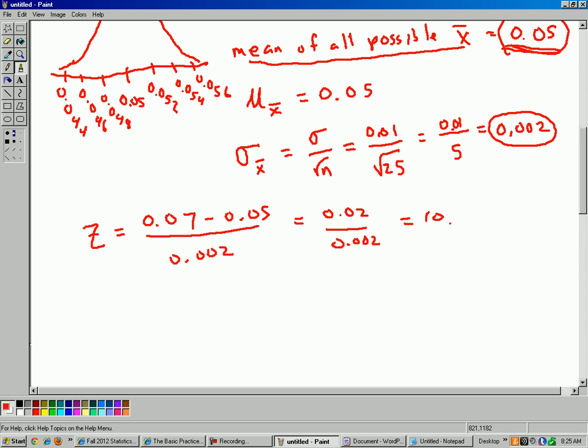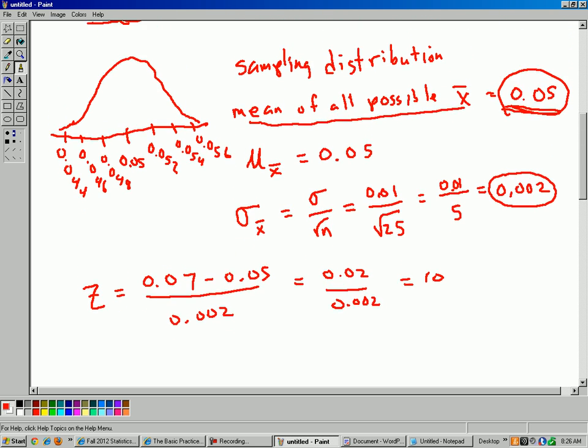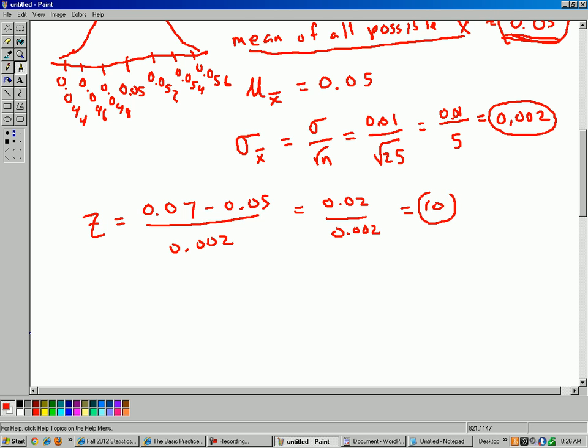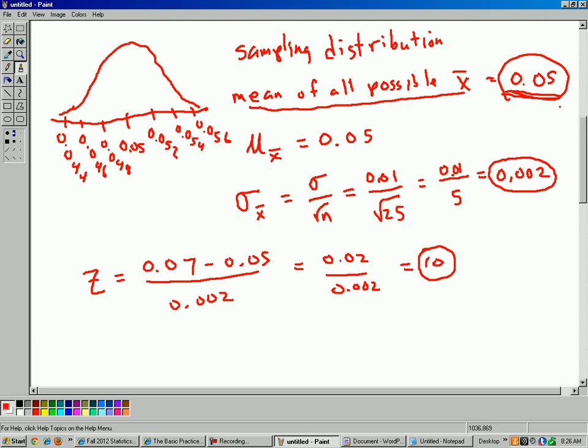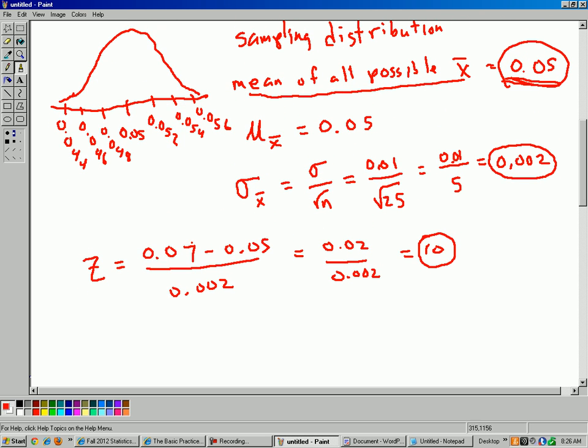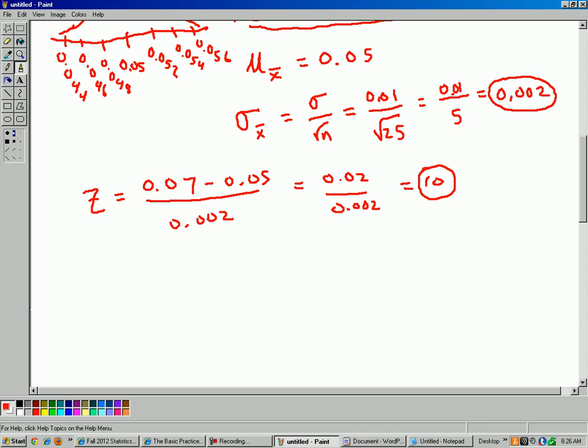So if you're like the luckiest person in the world, or the unluckiest person in the world, and you got a sample mean that is 10 standard deviations above 0.05, then yes, your sample mean would be 0.07. Well, 10, that's not even on the chart. So, I'm going to say the probability that your sample mean is greater than 0.07 is equal to 0. 10 standard deviations above the mean is so unlikely. For all practical purposes, it's 0. And that is it for this question.